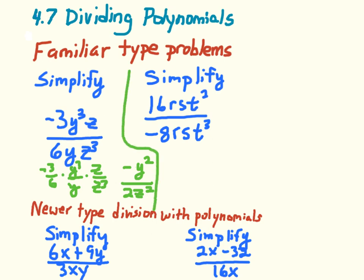The next problem: 16 over negative 8 leaves a negative 2 in the numerator. r over r is 1, s over s is 1, and t squared over t cubed leaves an extra t in the denominator. So that simplifies to just negative 2 over t.